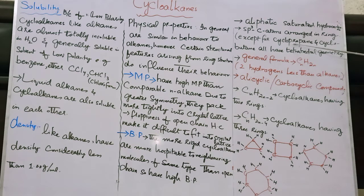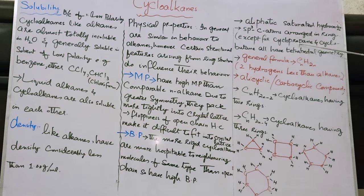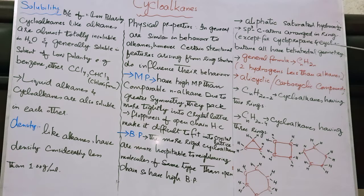You are familiar with these prefixes — prop, but. 'Prop' is for 3 carbons, as in propane. Cyclopropane is the simplest member of cycloalkane with 3 carbon atoms. Except for cyclopropane and cyclobutane, all cycloalkanes have tetrahedral geometry.